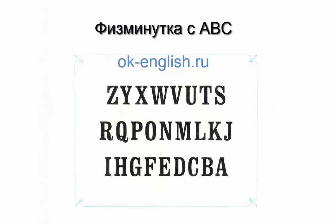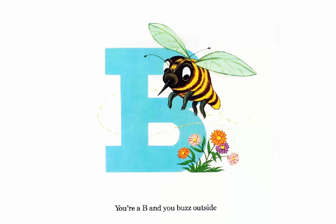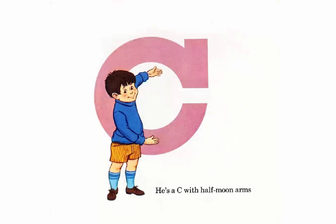Let's begin now. I'm an A with my arms out wide. You're a B and you buzz outside. He's a C with half-moon arms.